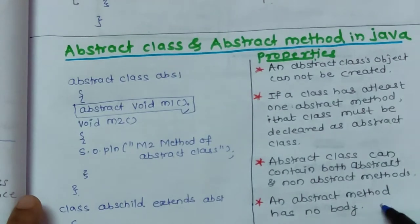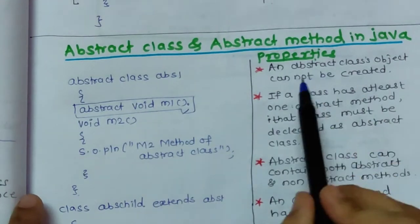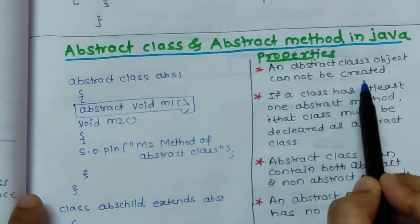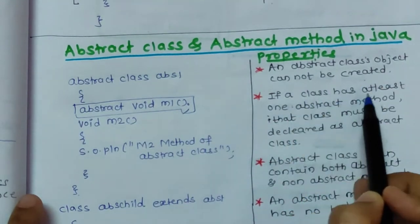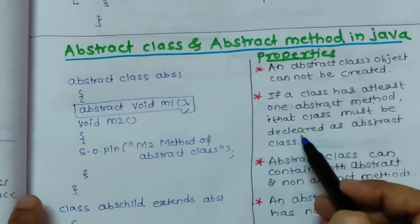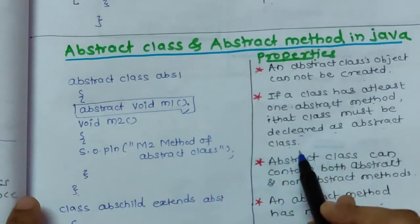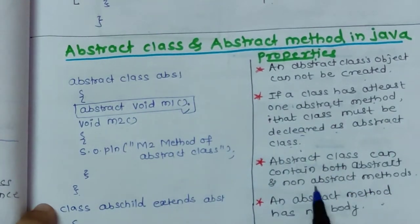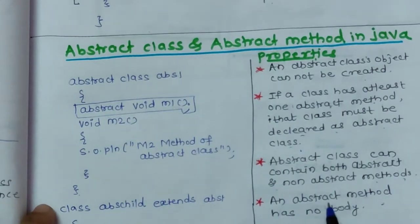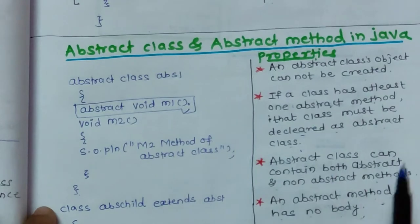First of all we will see some properties of abstract class. An abstract class object cannot be created. If a class has at least one abstract method, then that class must be declared as abstract class. Abstract class can contain both abstract and non-abstract methods, and an abstract method has no body.